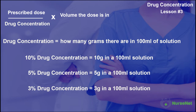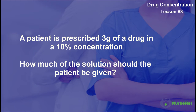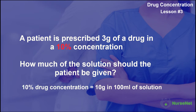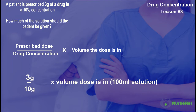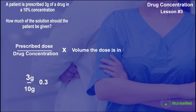It works in much the same way as our stock dose calculation. A patient is prescribed 3 grams of a drug in a 10% concentration. How much of the solution should the patient be given? We have 10% concentrate, equivalent to 10 grams in 100 milliliters of solution. Plugging into our formula: 3 grams divided by 10 grams, multiplied by 100 milliliters. 3 divided by 10 gives us 0.3, multiplied by 100 gives us 30 milliliters of solution.